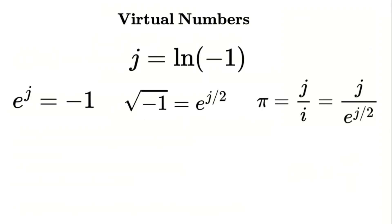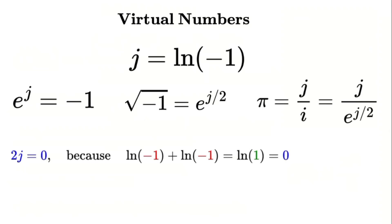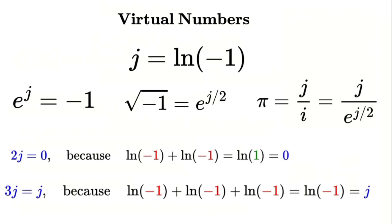Virtual numbers also have unique arithmetic rules. For example, 2j equals 0, because the natural logarithm of negative 1 plus the natural logarithm of negative 1 equals the natural logarithm of 1, which is 0. Also, 3j equals j, because the natural logarithm of negative 1 added three times equals the natural logarithm of negative 1, which is j. These properties make virtual numbers a powerful tool for reinterpreting mathematical formulas.